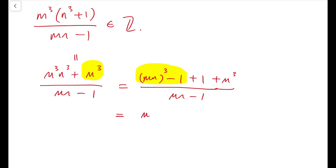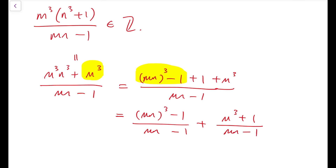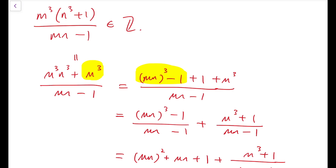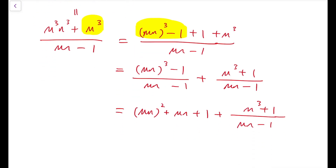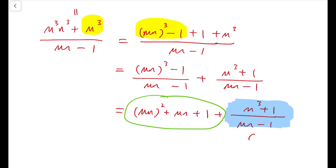So if I consider mn whole cubed minus 1, this expression is a multiple of mn minus 1. I can split the fraction: for the first part, using the identity of the difference of cubes, this equals mn whole squared plus mn plus 1, while the second fraction is m cubed plus 1 over mn minus 1. Through our calculations these are all integers, so m cubed plus 1 over mn minus 1 should also be an integer.